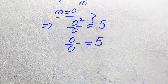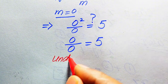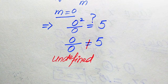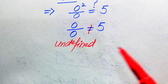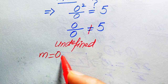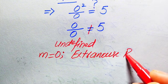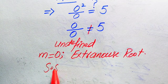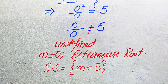The left hand side is undefined, so both sides are not equal. This means m equals 0 does not satisfy the equation — it is an extraneous root. Therefore, the solution set of this equation is m equals 5 only. Thank you for watching; please subscribe for more videos.